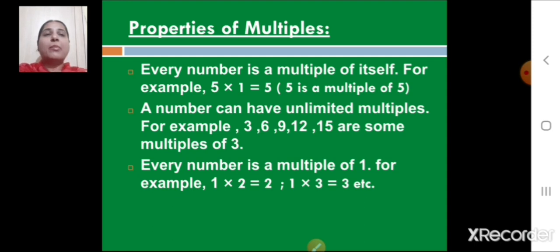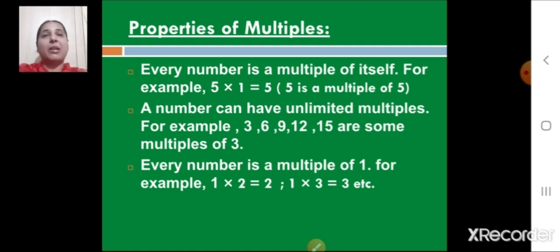The third property is: every number is a multiple of 1. For example, 1 × 2 = 2, and 1 × 3 = 3. So every number is a multiple of 1.